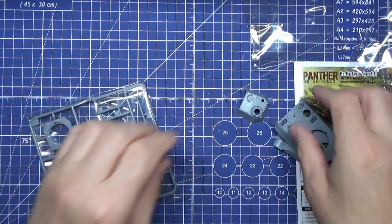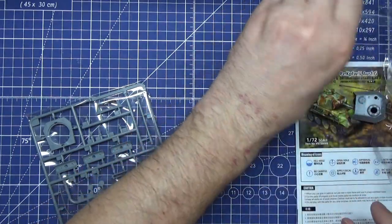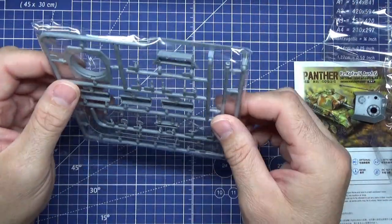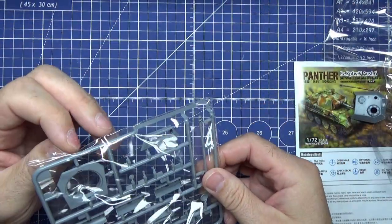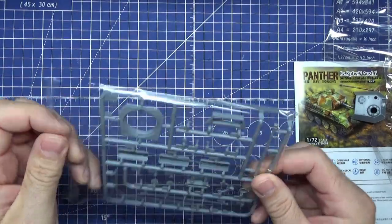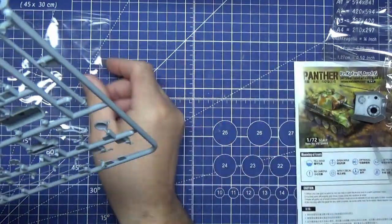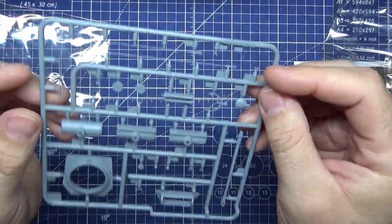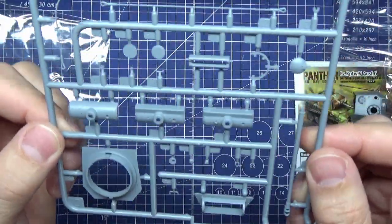We'll start now with the sprues. We'll do the first one here and that looks like it's the turret one. It's also got some bits on as well for it.